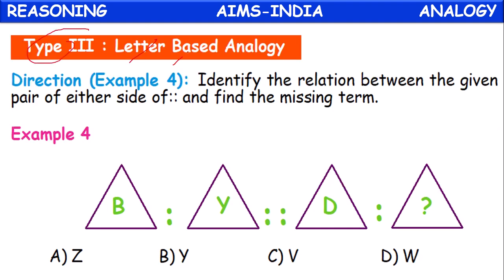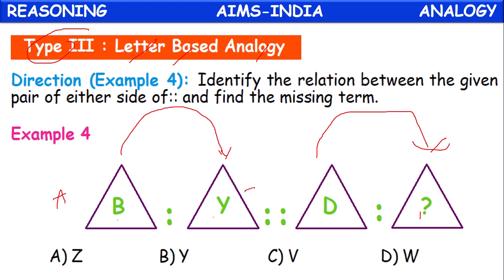Type 3 is letter-based analogy. If B is related to Y, then D is related to what? B is the second element from the left side of the alphabet, and Y is the second element from the right side. Similarly, D is the fourth element from the left. From the right side, the fourth element is Z, Y, X, W. So W is the correct answer.